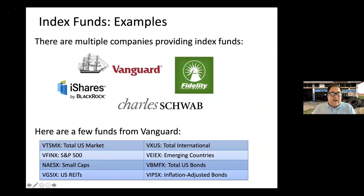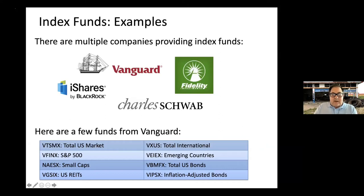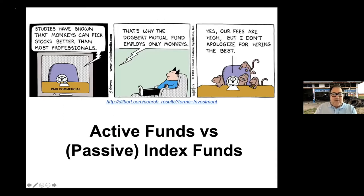From Vanguard, examples include Total Stock Market (VTSMX/investor shares), S&P 500, Small Caps, U.S. REITs (real estate investment trusts), International, Emerging Markets, Total U.S. Bond Market — which is a combination of corporate and treasury bonds rather than a truly total bond market — and TIPS inflation-adjusted bonds, among about 250 or more funds.